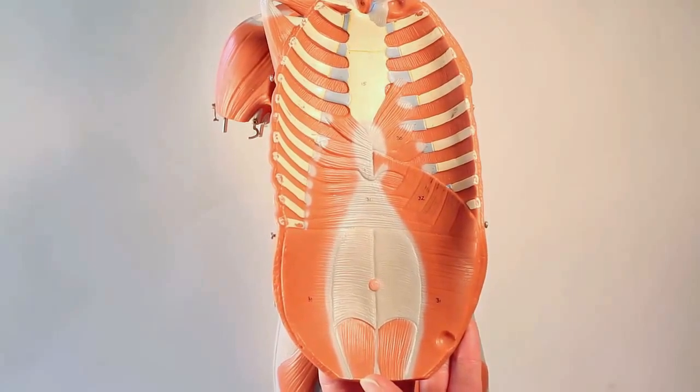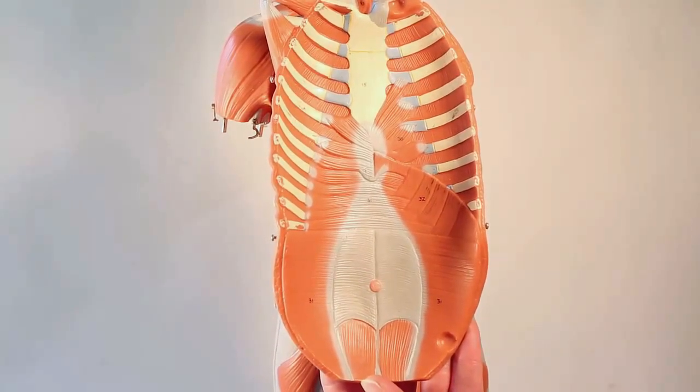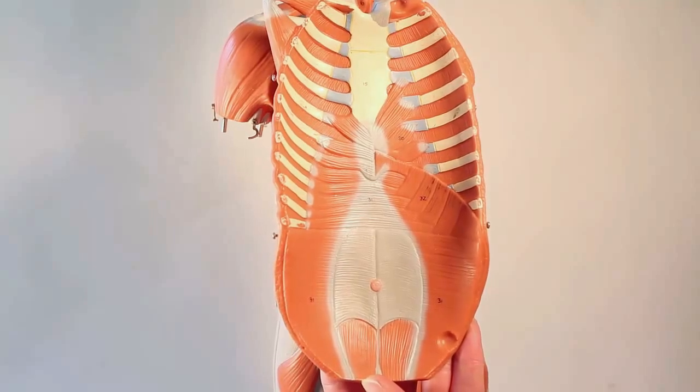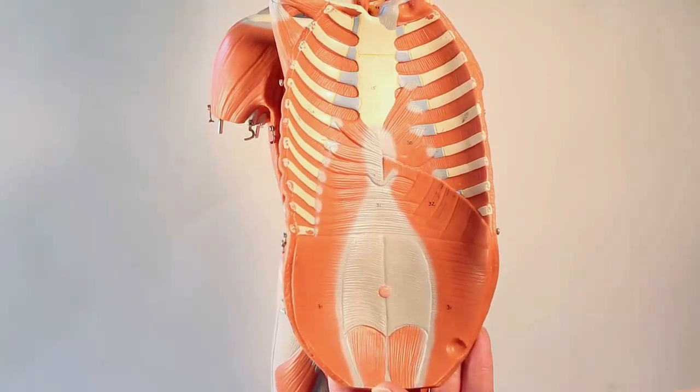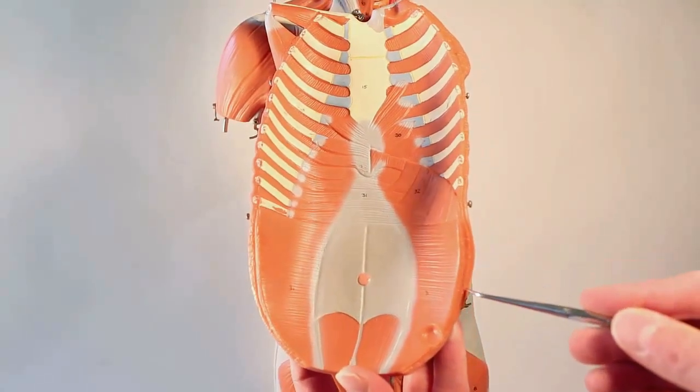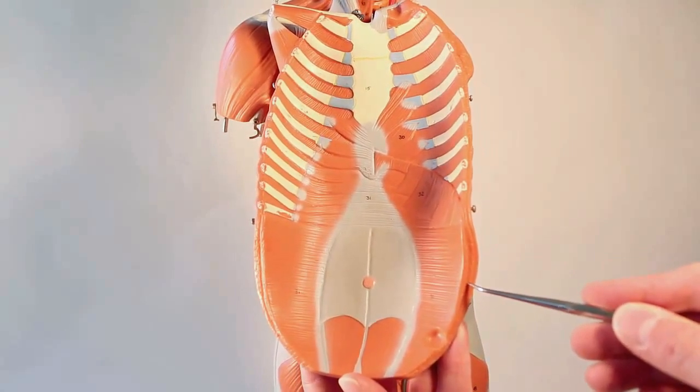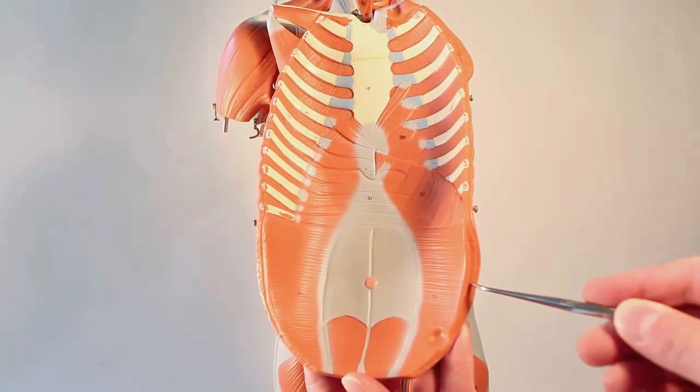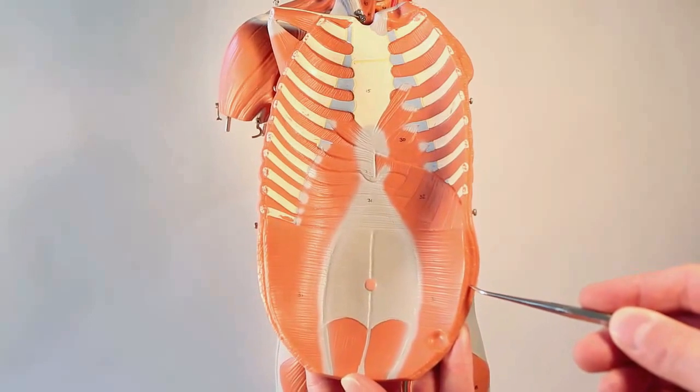Their action, compress the abdominal contents. So the transverse abdominus is the deepest. The middle layer, which you can see a little bit right here, would be made up of the internal oblique and the rectus abdominus. And the external layer would be made up of the external oblique.